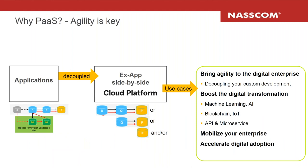In bimodal IT, there is the mode one platform with all your core applications, and then the cloud platform on the right, which helps you bring in new technologies and build applications that you can release every week or every day if you want. Agile application surrounds the core and can be separated.